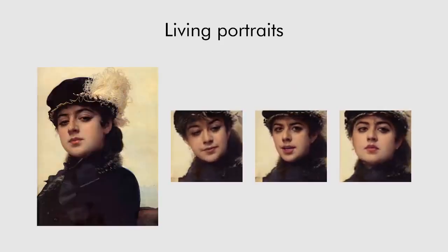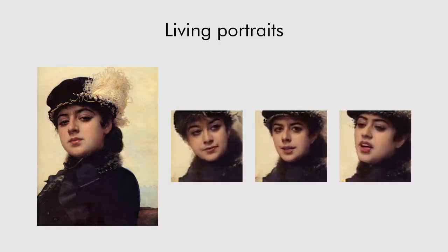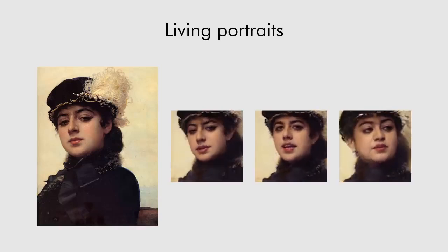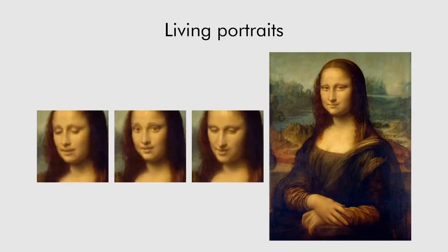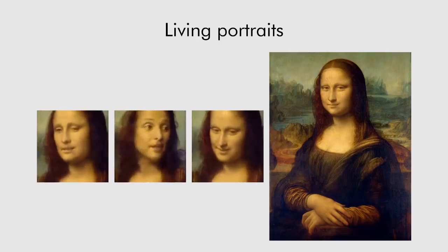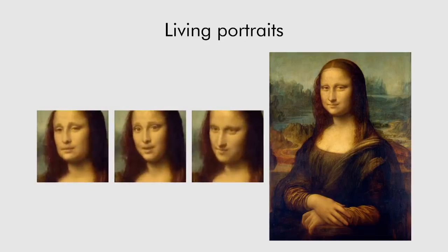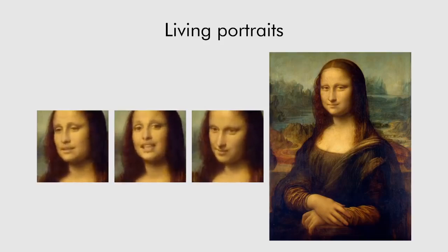With a certain degree of success, we can even apply the model to paintings, despite the large domain gap between paintings and YouTube videos. In some cases, the model might be very sensitive to the geometry of the landmarks. Driving Mona Lisa with landmarks from three different people results in videos with very distinct personalities. Landmark adaptation and tighter integration of our system with landmark tracking remains future work.